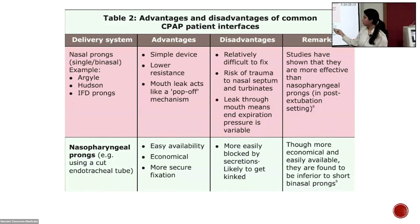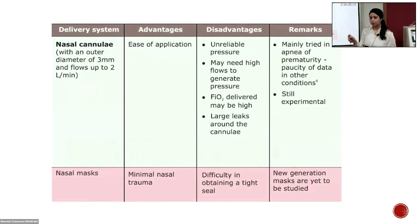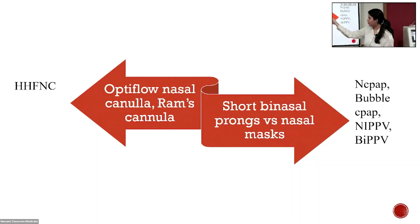Argyle, Hudson, and IFD prongs are short binasal prongs. These are simple, low-resistance devices. The mouth leak acts as a pop-off mechanism for extra pressure. The disadvantage is that they are relatively difficult to fix, there is a risk of trauma to the nasal septum and turbinates, and expiratory pressure is variable. Nasal masks have the advantage of providing minimal nasal trauma. In my practice, I would shift between Fisher & Paykel nasal prongs, short nasal prongs, and nasal cannula so that extra pressure is not applied to the nasal septum and there is no septal damage. The Optiflow nasal cannula and RAMS cannula can be used to provide HFNC, while short binasal prongs and the nasal mask can be used to provide CPAP.